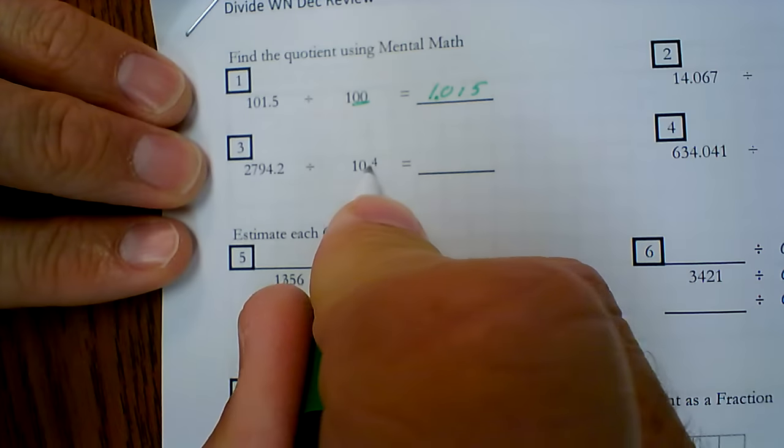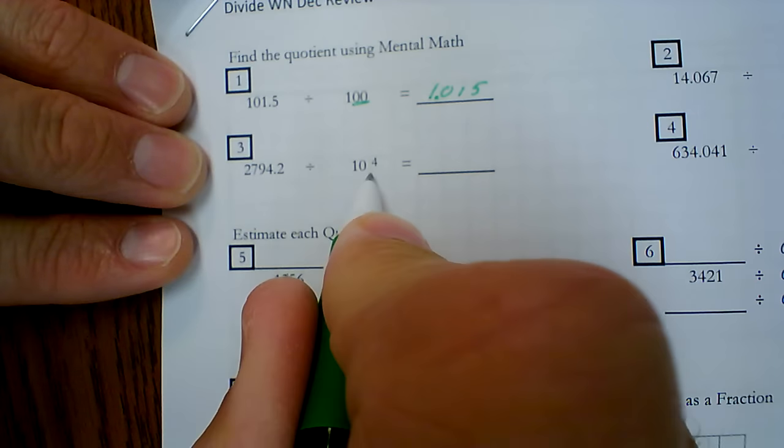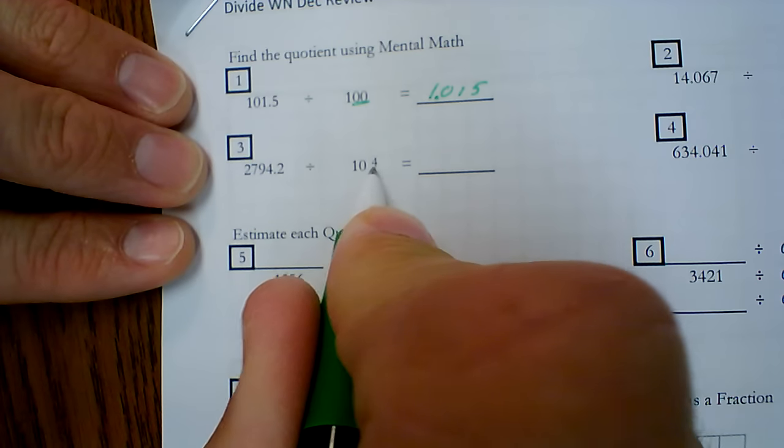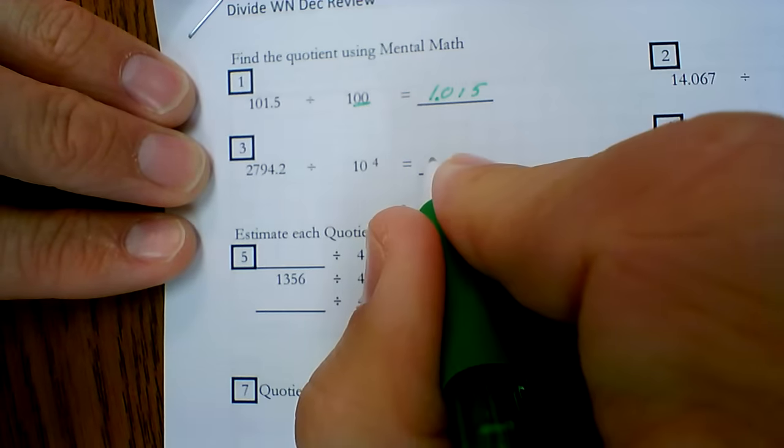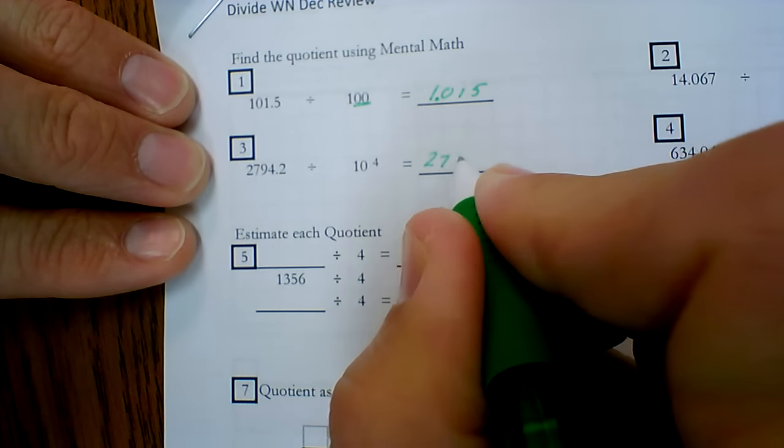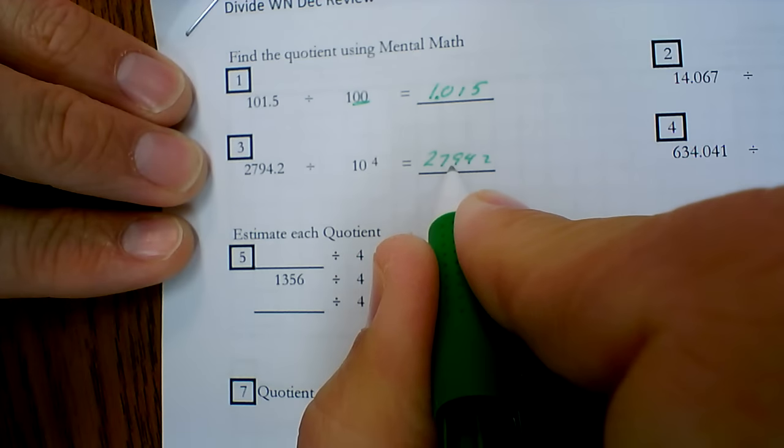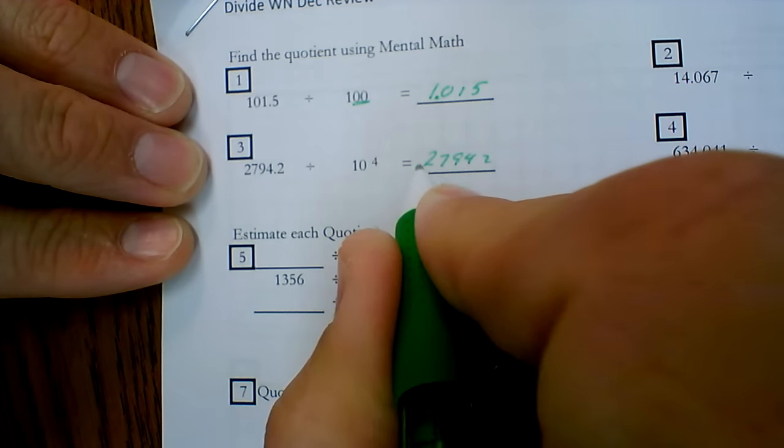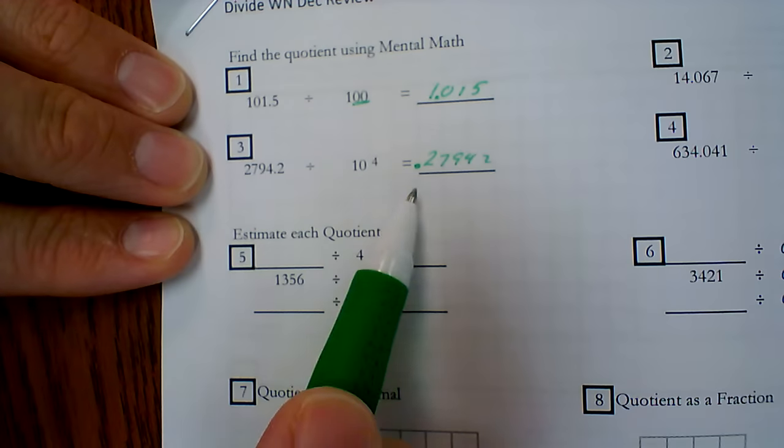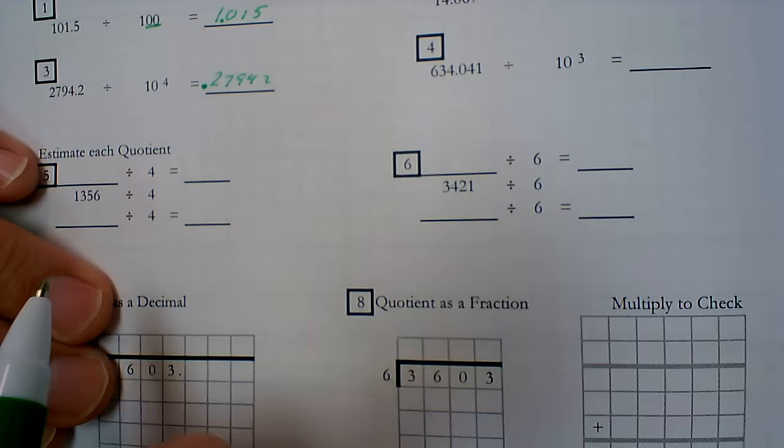Now, here I've got an exponent. My exponent is 4. That tells me that 10 to the fourth power is 10,000. Four zeros, I need to move the decimal point four times. So again, I'm going to copy the digits. 27942. Decimal point's here, 1, 2, 3, 4. Again, I don't have to put a zero in front because zero is the same thing as nothing.